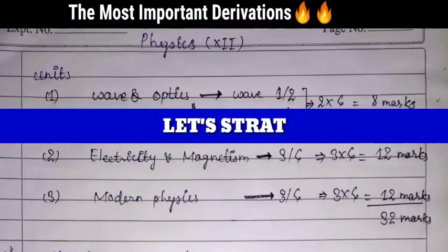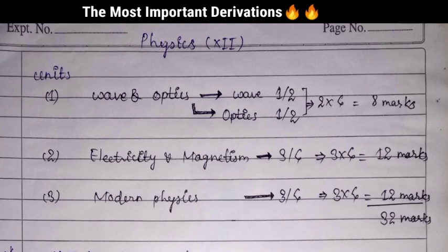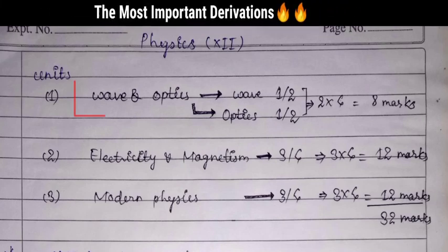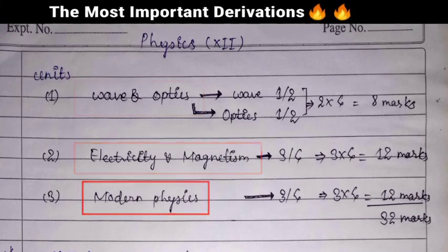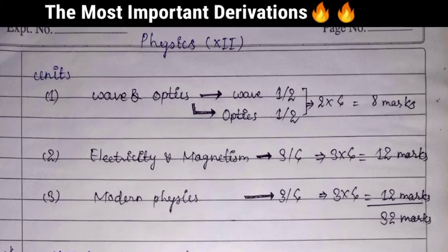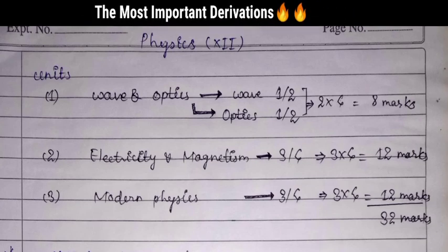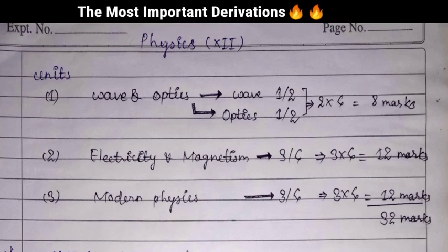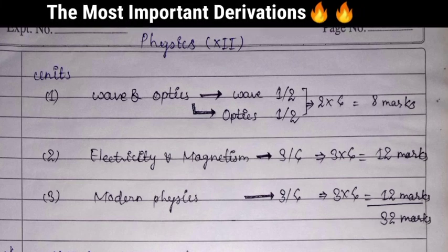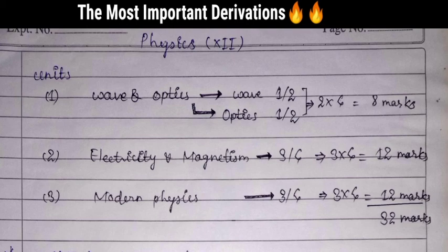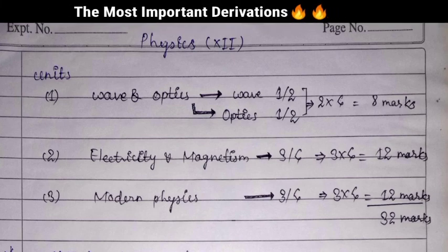Let's start today's topic, which is the most important derivations for Class 12 physics. Class 12 physics is divided into three units: waves and optics, electricity and magnetism, and modern physics. Waves and optics has two sub-units, with waves having two derivations.